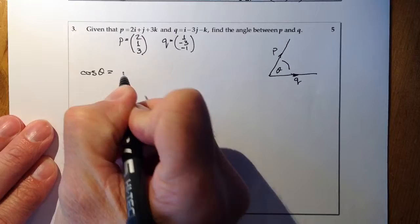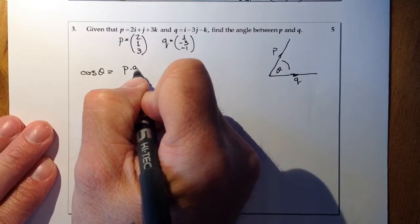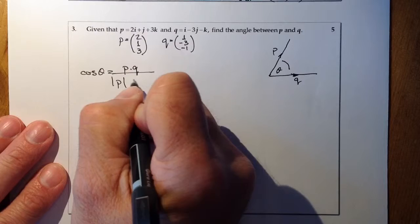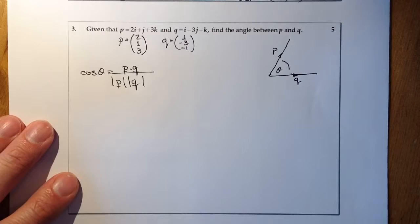So the formula I'm going to work with is cosine theta is going to be equal to... So instead of A and B, I'm going to use the P and the Q. So I've got P dot Q. And that's all going to be over the magnitude of P and the magnitude of Q. So there's my vectors.